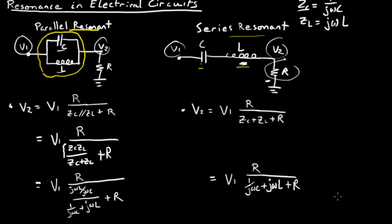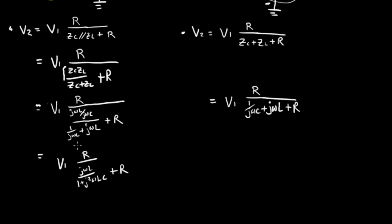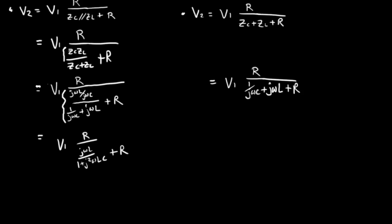Let's scroll down and simplify a little more. Here for this term here, I've multiplied both the numerator and denominator by j omega C to make this new expression here. I'm running out of room so I'll scroll down a little bit.